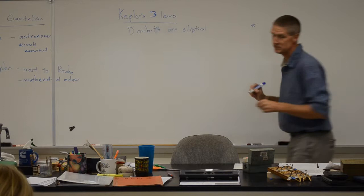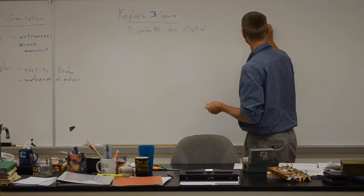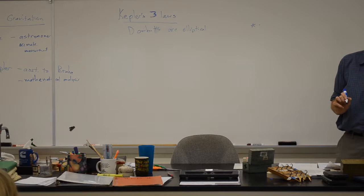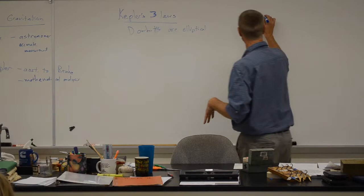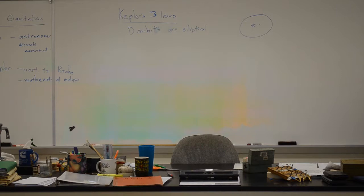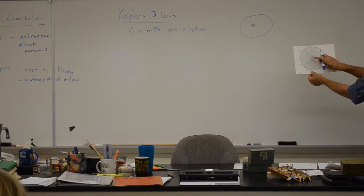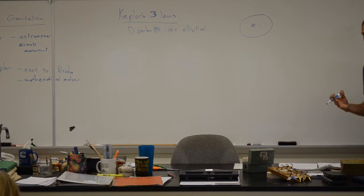We're going to draw a star to represent our sun, and another point close to it — the foci of our ellipse. Out in outer space, there's nothing at that second foci. We draw the ellipse representing the orbit of Earth, Mars, or Mercury — just like on our polar graph paper. The sun sits at one of the foci of the ellipse.